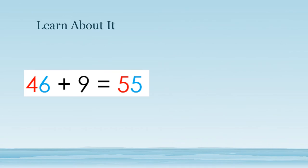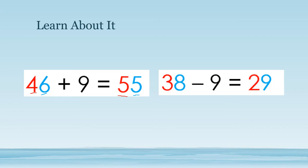Look at the place value in the numbers when you add 9. In 46 plus 9 equals 55: the tens place increases by 10, but the ones place decreases by 1. Look at the place value when you subtract 9: the numbers in the tens place decrease by 10, but the numbers in the ones place increase by 1.